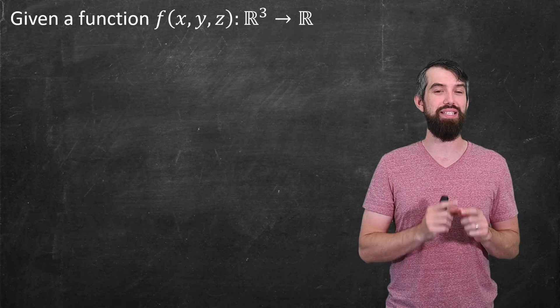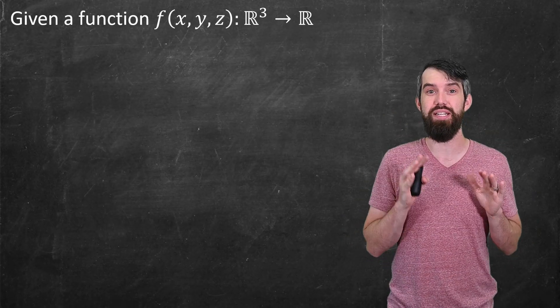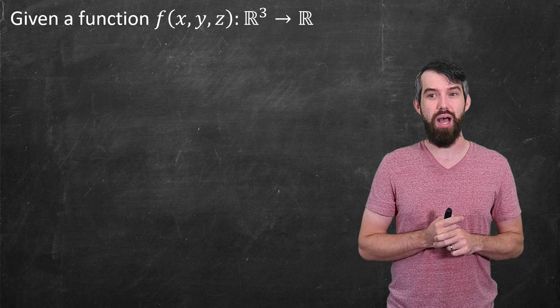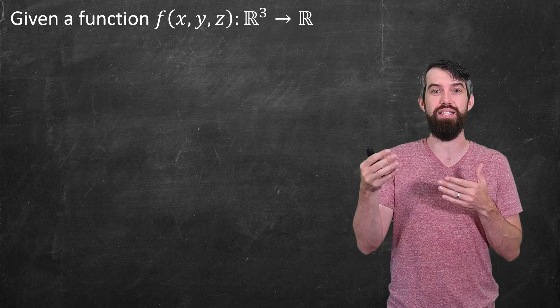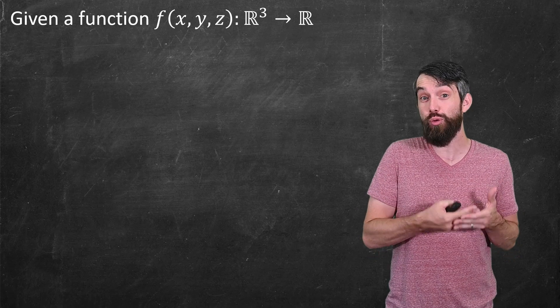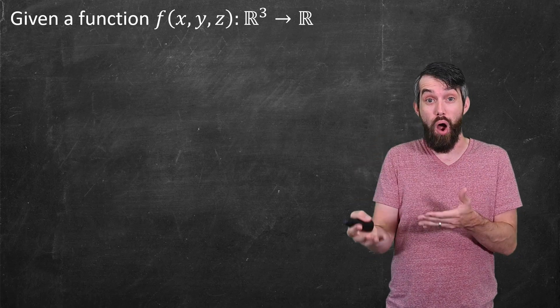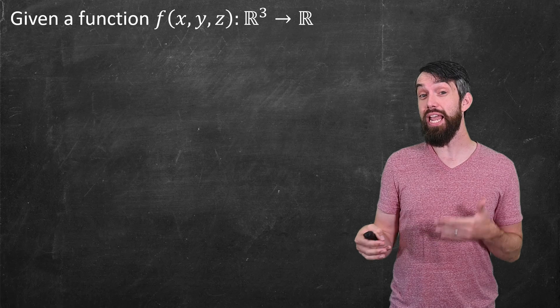The final example we're going to do is an incredibly important example of a vector field that comes from just a normal old scalar function f of x, y, and z. A function from ℝ³ in this case, just to ℝ. Well, for such a scalar function,